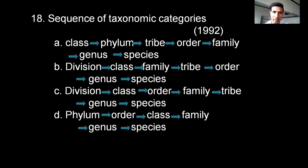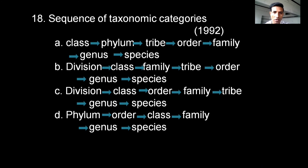Question on the sequence of taxonomic categories: One option lists class, phylum, tribe, order, family, genus, species. The correct option is C — division, class, order, family, tribe, genus, species — which follows the correct taxonomic hierarchy.